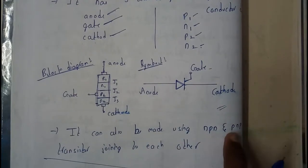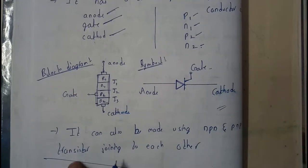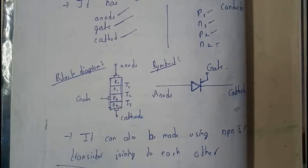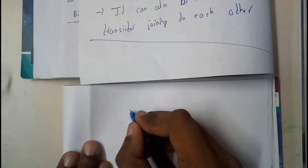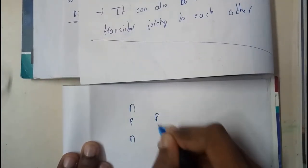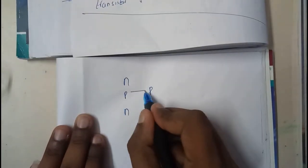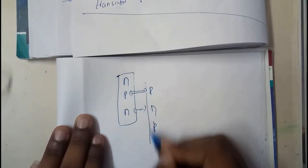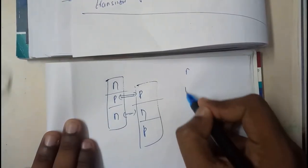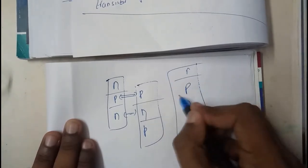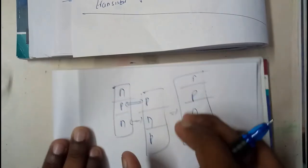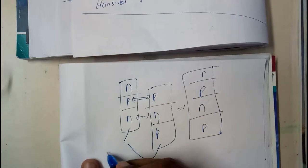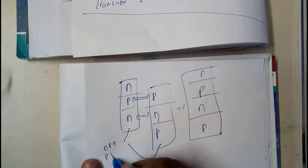SCR can also be constructed using an NPN and a PNP transistor. If you arrange them such that these two middle layers are similar, at the end they form an N-P-N-P structure. This is how we draw an SCR in terms of two transistors — NPN and PNP.